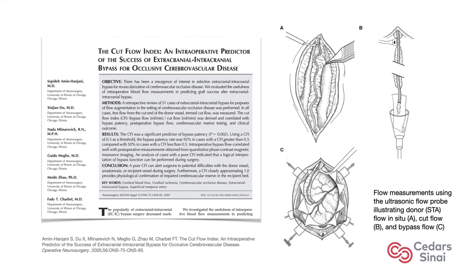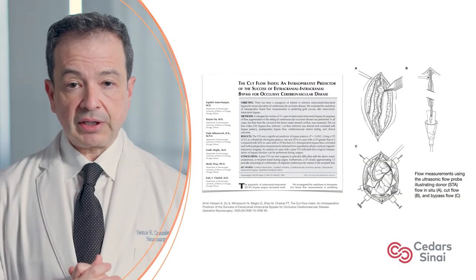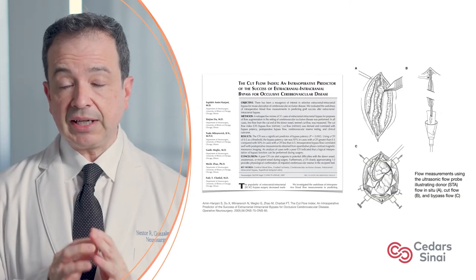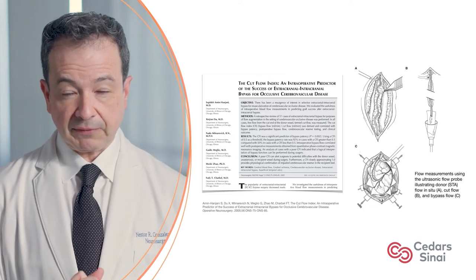The use of Doppler ultrasonography to measure flow may offer a quantitative advantage in direct bypass design. Baseline flow measured in the donor and recipient arteries intraoperatively determines if a donor is adequate to revascularize the recipient. Bleeding from a transected scalp artery represents the maximum donor flow or cut flow, which must be equal to or greater than the baseline flow in the recipient vessel. This can also be used after the anastomosis is completed as an early detection tool for possible bypass failure.